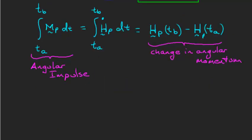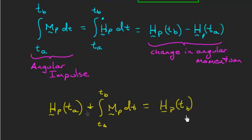And just like with the linear impulse, linear momentum principle, I like to write this in a slightly different way. And when we write it this way, it says the angular momentum at time T B is equal to the angular momentum at time T A plus this thing I'm calling the angular impulse.